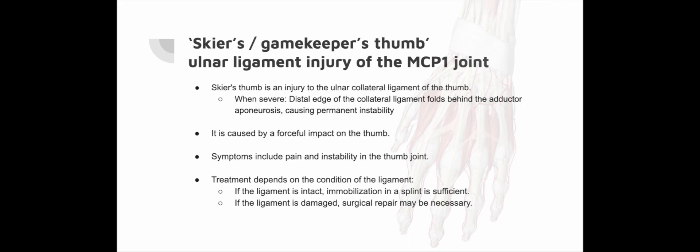Skier's thumb / gamekeeper's thumb — ulnar ligament injury of the MCP1 joint: The skier's thumb is an injury to the ulnar collateral ligament of the MCP1 joint, typically arising from a forceful impact on the thumb such as falling with ski poles strapped to the hand or recoiling from a rifle. Symptoms include tenderness over the ulnar aspect of the joint and notable instability in the radial direction of the MCP joint. Radiographs may reveal an increased space within the joint. Treatment depends on the ligament's condition: if the ligament ends remain aligned, immobilization in a splint for three weeks is adequate. However, if the distal end of the ligament has folded behind the adductor aponeurosis, causing permanent instability, surgical repair is necessary. Failure to address this issue promptly may require secondary reconstruction.